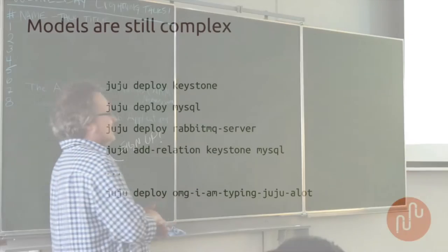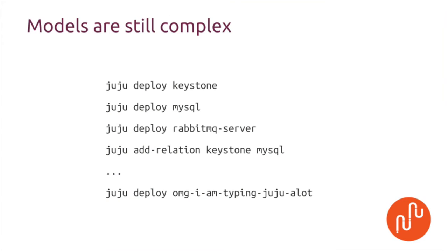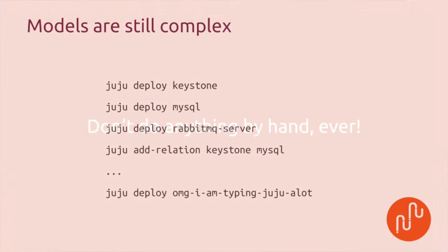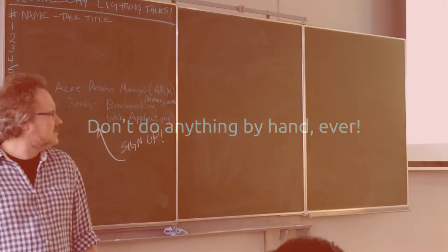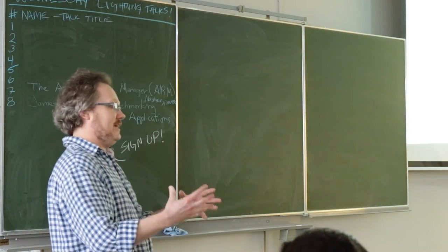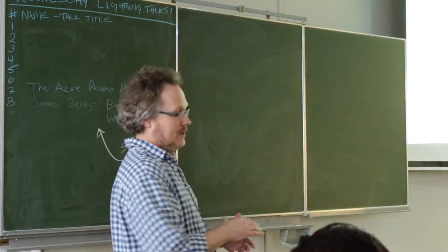However, it's still a complex model even when we do it with Juju. Running this stuff on the command line is really a no-go — you end up with hundreds of commands, lots of shell scripts, and it gets really tedious. So fortunately, Juju gives us a really nice construct for encapsulating a model, and that's a bundle.